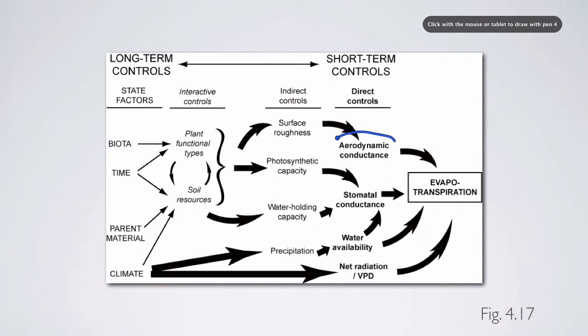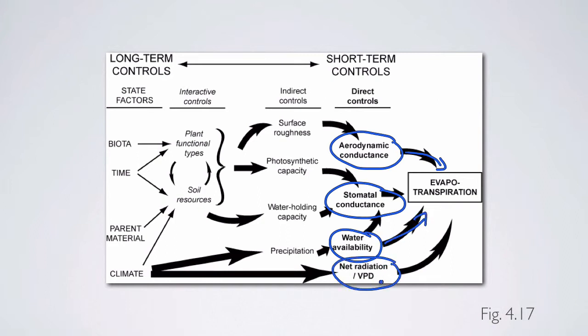So in this case, aerodynamic conductance is really important for evapotranspiration. Having a rough canopy with a lot of turbulence serves as a positive factor that increases ET. The more stomatal conductance you have, the more open your stomates are, the more ET you're going to have. And the more water you have available to plants, the more ET you're going to have. Lastly, a high vapor pressure deficit, high net radiation, lots of sunlight, that's also going to serve to increase ET. So ecosystems that have, that are rough, have a lot of stomates that are wide open, with a lot of water available, and there's a lot of sunlight with high vapor pressure deficit, are all going to have high ET.